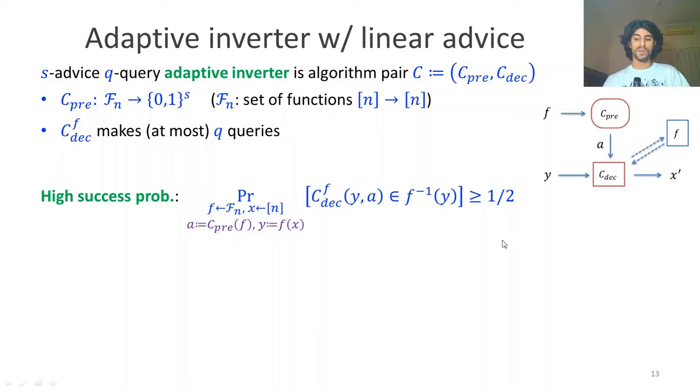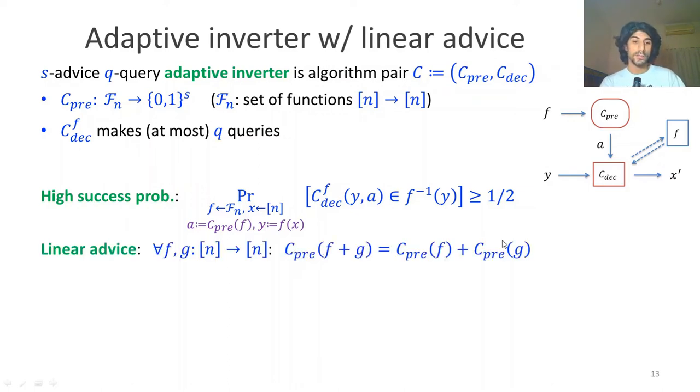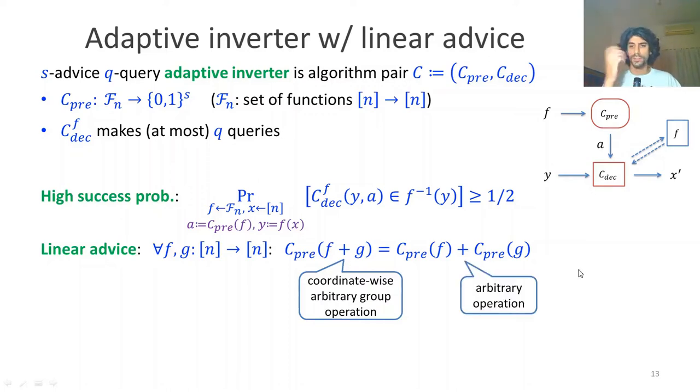To produce a lower bound, we made a further assumption on how this algorithm operates. Suppose such an algorithm has linear advice. Linear advice means that given any functions f and g, suppose we have the advice for f and the advice for g, we can combine them to figure out the advice for another function f plus g. f plus g is coordinate-wise group operation, and the plus on the right side could be any operation, as long as we can figure out the left-hand side from the two elements on the right-hand side.